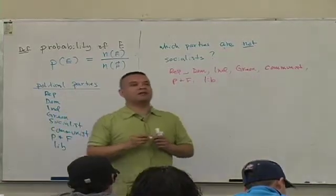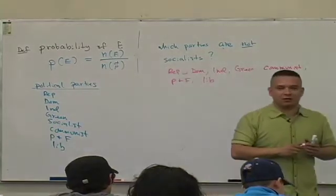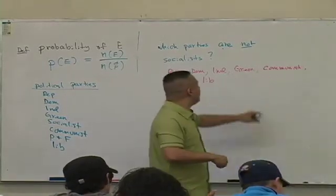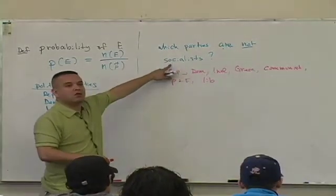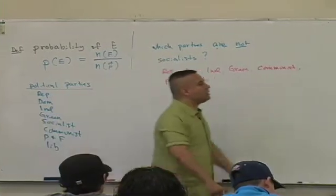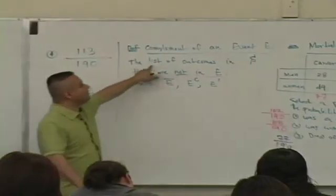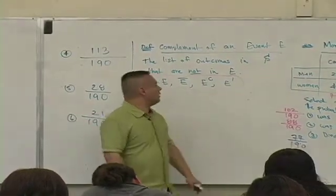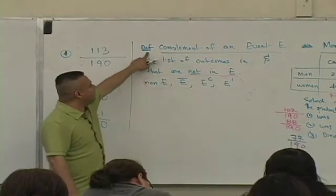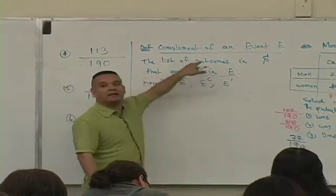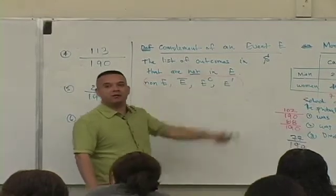These are the parties that are not the Socialist Party. Is that true? More importantly, we have to determine the complement of the Socialist Parties. The definition is, consider the context. Consider the sample space, that context. The complement of an event, or the complement of a list, are those that are not in the list, but they're still in the sample space.